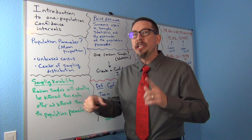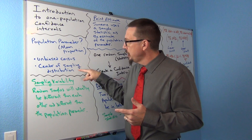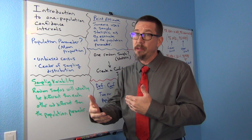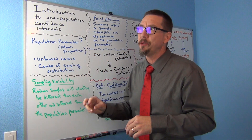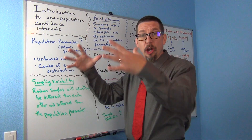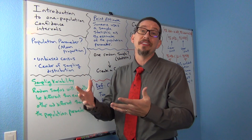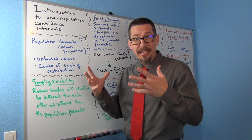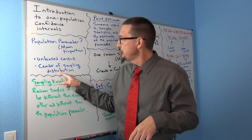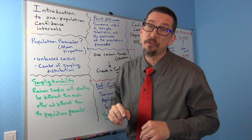Also, we saw in our study of sampling distributions that, at least for mean and proportion, when we looked at the center of the sampling distribution — sampling distribution being like thousands of random samples — you calculate tons of sample means and put them all in the same graph, or tons of sample proportions in the same graph. That's called a sampling distribution. What we found was that the center of the sampling distribution was actually pretty close to the actual population parameter.